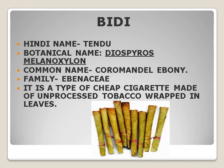Bidi. Its Hindi name is Tedu. Botanical name is Diospyros melanoxylon. Its common name is Coromandel Ebony. It belongs to the family Ebenaceae. It is a type of cheap cigarette made of unprocessed tobacco wrapped in leaves.